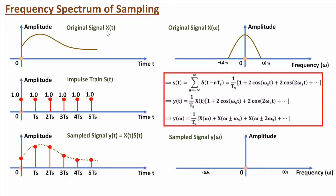Since the output Y(t) is the multiplication of X(t) and the impulse train, in the frequency domain the output Y(ω) equals (1/Ts)·X(ω) at the base, plus shifted copies. Multiplying X(t) by cos(ωs·t) gives components at ω ± ωs; multiplying by cos(2ωs·t) gives components at ω ± 2ωs, and so on. This is Y(ω) in the frequency domain.